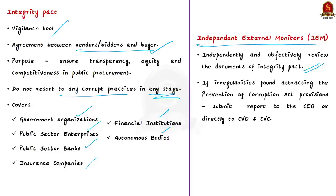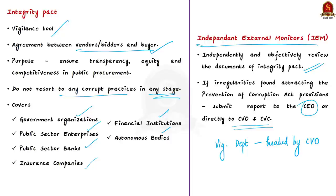After reviewing documents, IEMs submit a report to the chief executive of the concerned organization, or to the Central Vigilance Officer, or directly to the Central Vigilance Commission. Each department or organization under the normal advisory jurisdiction of the CVC has a vigilance department headed by a senior officer designated as the Chief Vigilance Officer, appointed with the concurrence of the CVC. IEMs also report serious irregularities which attract the provisions of the Prevention of Corruption Act.